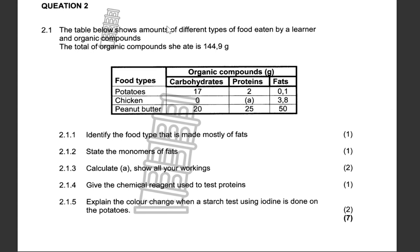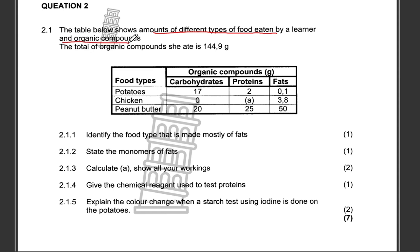The table below shows amounts of different types of food eaten by Elena and the organic compounds. The total organic compounds she ate is 144.9 grams. You are given the food types in the first column — potatoes, chicken, and peanut butter — then in the second column you are given the organic compounds in grams: carbohydrates, proteins, and fats.